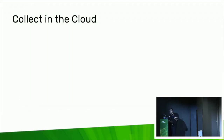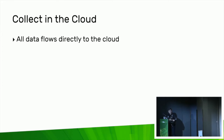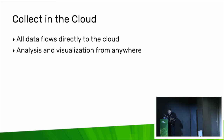The first option is to collect in the cloud. InfluxDB Cloud is a perfect option for this — it speaks HTTP, so most of your IoT devices will be able to just connect directly and start sending data there. In this example, all data flows directly to the cloud with no intermediary — no edge device, no routers, no pipeline. One of the benefits is that you get analysis and visualizations from anywhere. You have a single source of truth, and anyone can connect to build dashboards and analytics without worrying about stale or misplaced data.